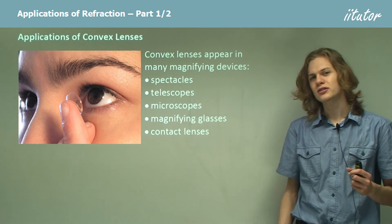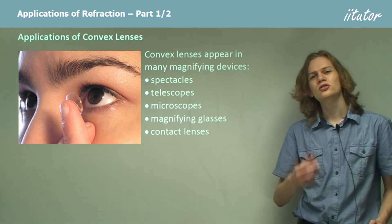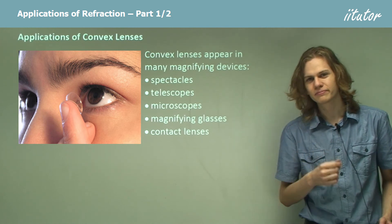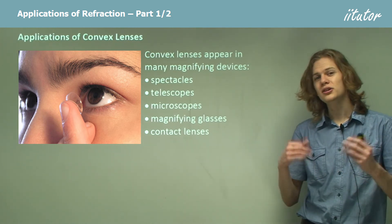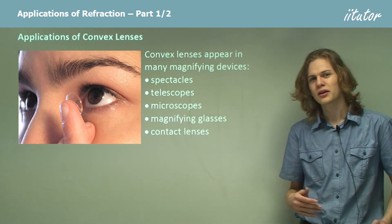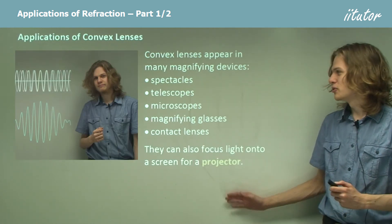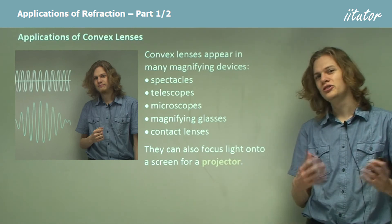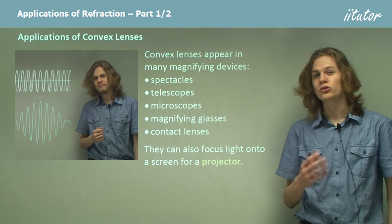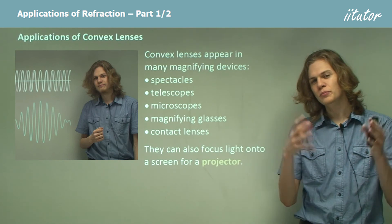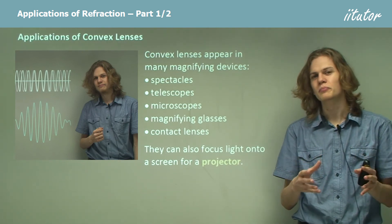Contact lenses are another use — these are lenses which, instead of being held in front of the eyes, come into contact with the eyes. And of course, if ever we're projecting an image onto a screen, then we need lenses for that as well. A projector, whether a digital projector or an analog overhead projector, will use lenses to focus the beams of light into a coherent, sharp picture.